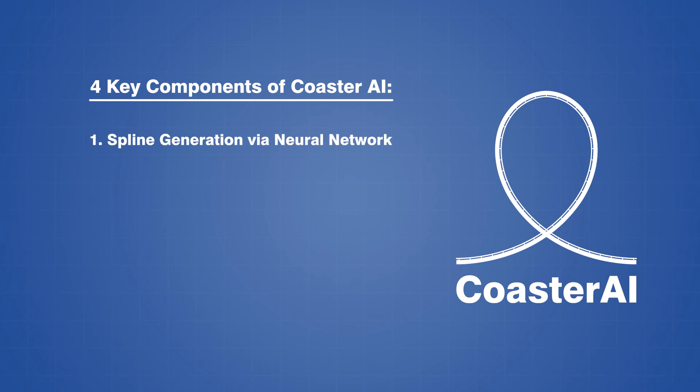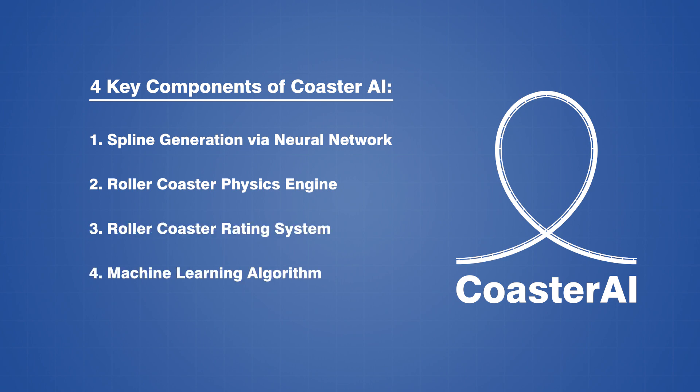A method for generating splines using a bot that is comprised of a neural network. A basic physics engine for computing things like velocity, acceleration, and g-force, a rating system that provides a quantitative score for each rollercoaster design, and a machine learning algorithm that trains the program and optimizes its behavior. I am going to run through each of these, focusing primarily on the AI and machine learning components, starting with spline generation using a neural network.